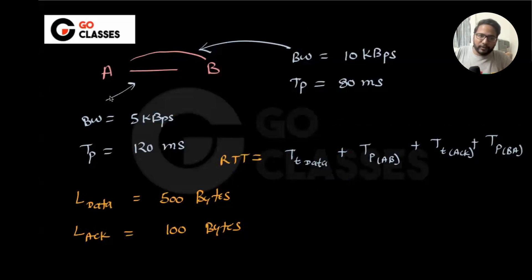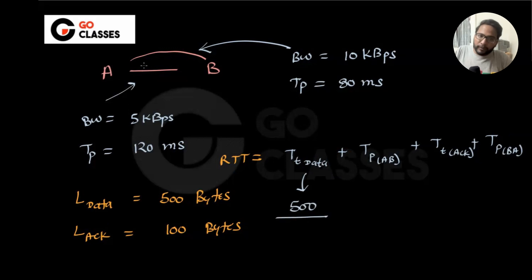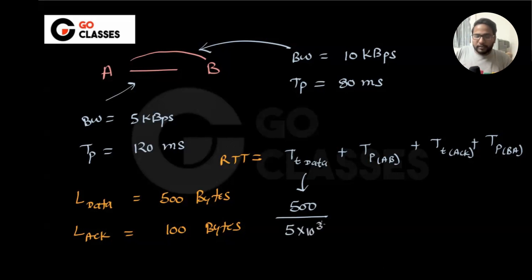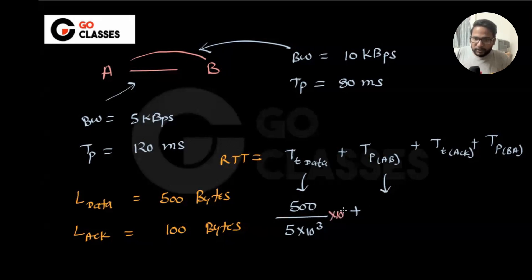What is the transmission time of data? It is length — 500 bytes — upon bandwidth. Since A is transmitting, we use the A-to-B bandwidth, which is 5 kbps (5×10³ bits per second). So this will be in seconds. The propagation delay from A to B is 120 milliseconds.